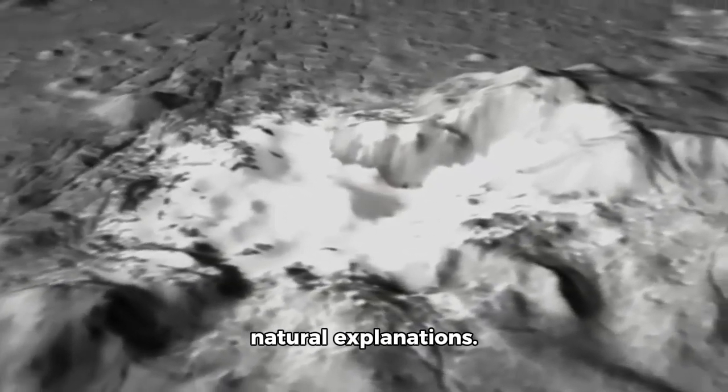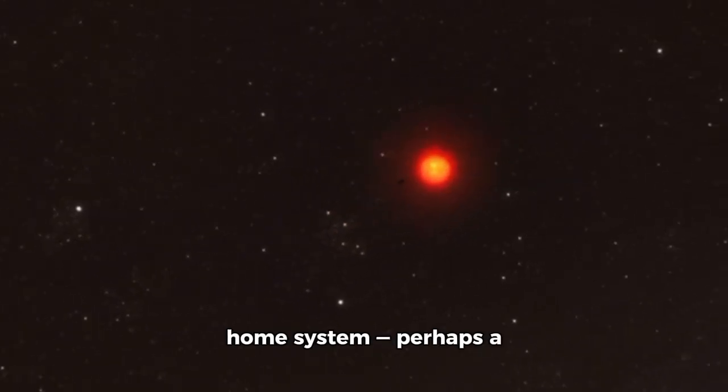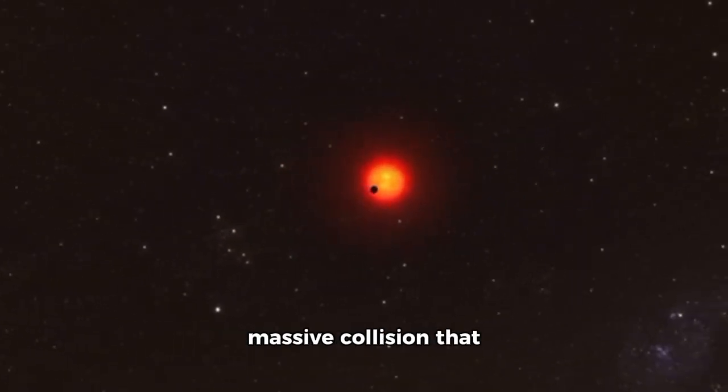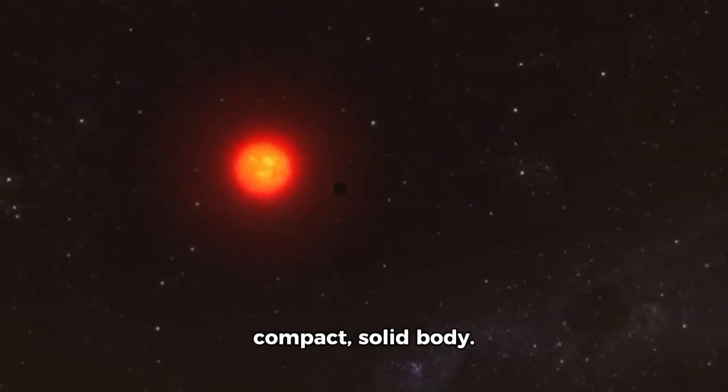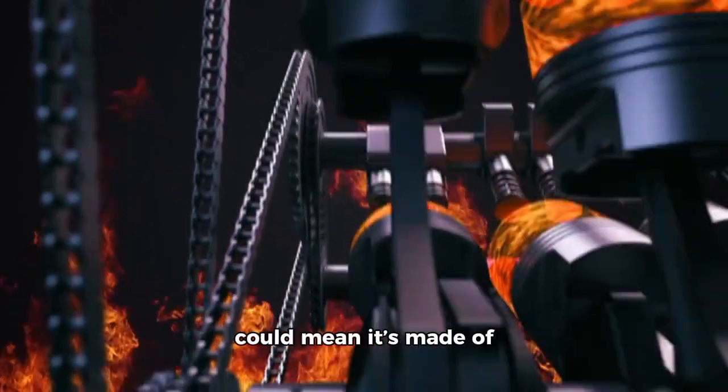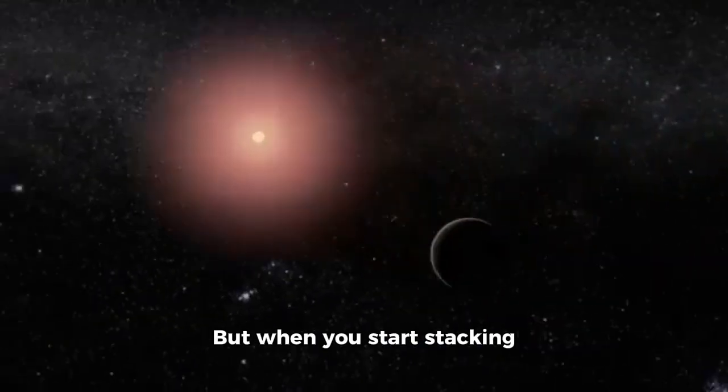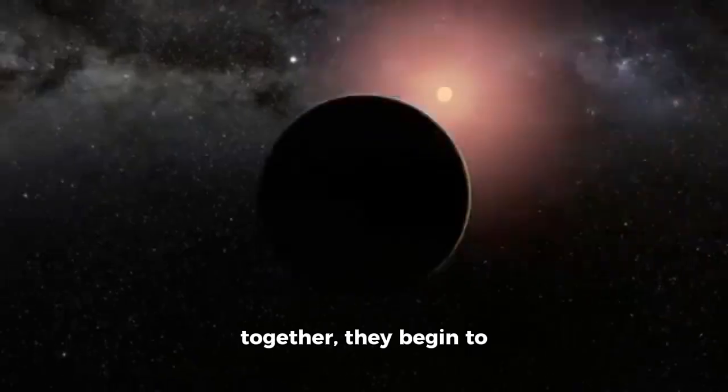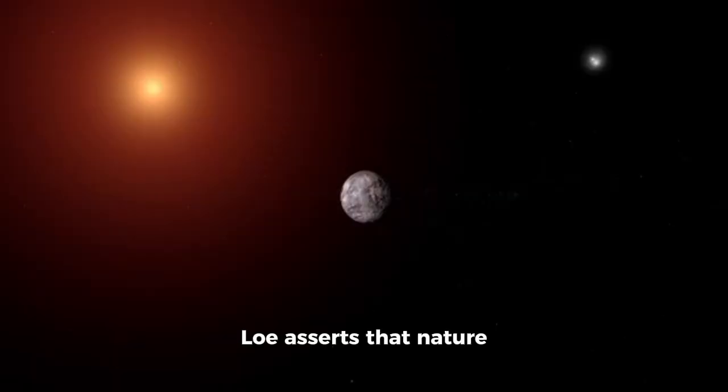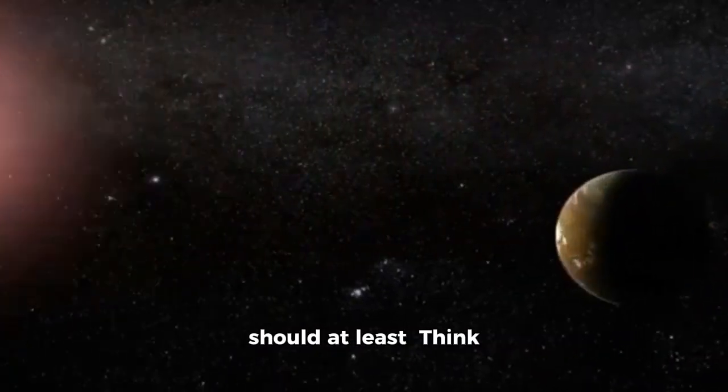Of course, there are natural explanations. Its size and density could result from a rare formation process in its home system, perhaps a massive collision that fused debris into a compact, solid body. Its orbit could simply be cosmic coincidence, aligning with our solar system's plane by chance. And its weak outgassing could mean it's made of materials that don't easily evaporate. But when you start stacking these coincidences together, they begin to feel like a house of cards. Loeb asserts that nature does not always need to be chaotic. However, when something looks this orderly, we should at least think about the other option.